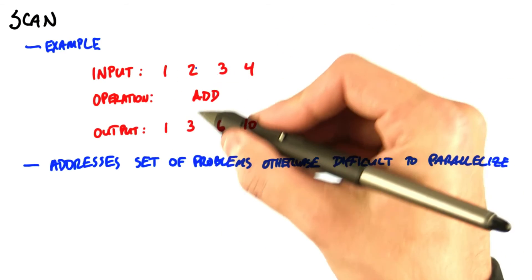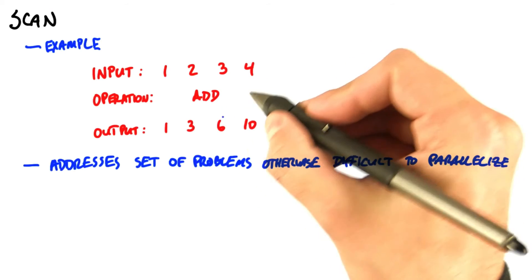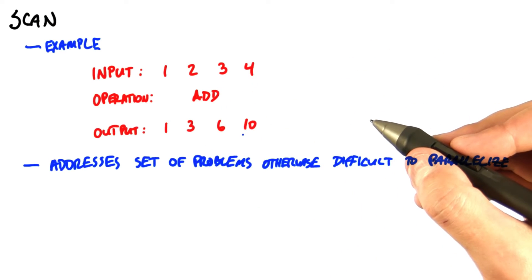So first we compute this, add 2 and get 3, add 3 and get 6, add 4 and get 10. That doesn't seem like a very parallel operation.